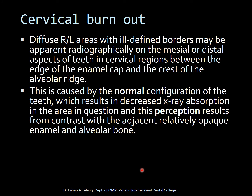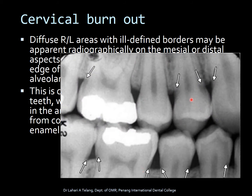There is an interesting finding called cervical bone burnout. It refers to diffuse radiolucent areas with ill-defined borders apparent radiographically on the mesial or distal aspects of teeth in the cervical areas, generally seen between the edge of the enamel cap and the crest of the alveolar ridge. This is caused by the normal configuration of teeth, which results in decreased X-ray absorption in the area. The radiolucent areas seen at the cervical aspect of the teeth are not actually caries but cervical burnout — a radiographic perception due to differential absorption of X-rays.